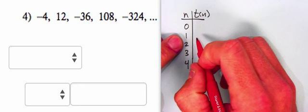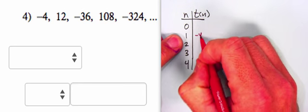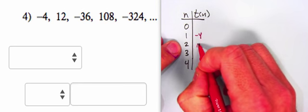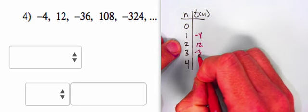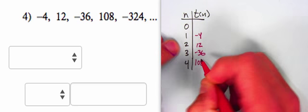So I'm going to put the numbers in here: negative 4, 12, negative 36, and 108, just to get me started at least.